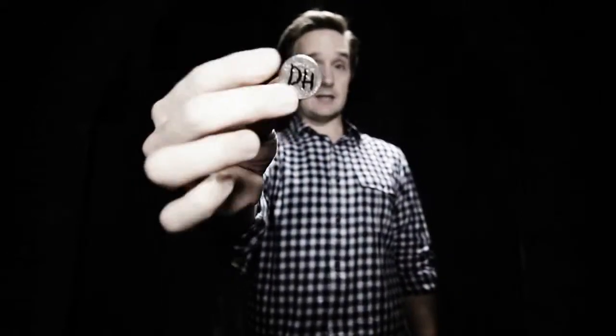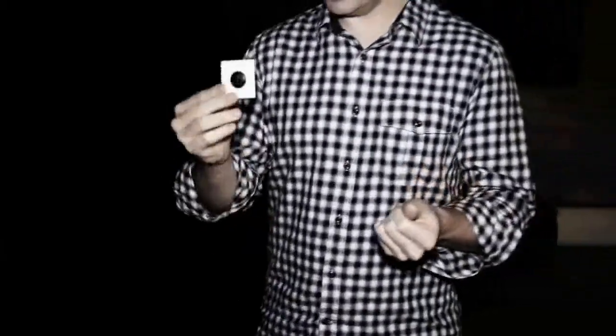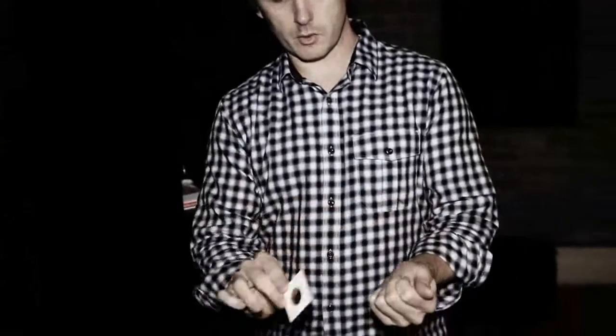So at this point, you borrow a coin. Let's say you borrow a quarter and have the spectator sign the coin with a marker on both sides. Okay. Watch this. I'm just going to wave the coin holder like this, okay, right over my hand.